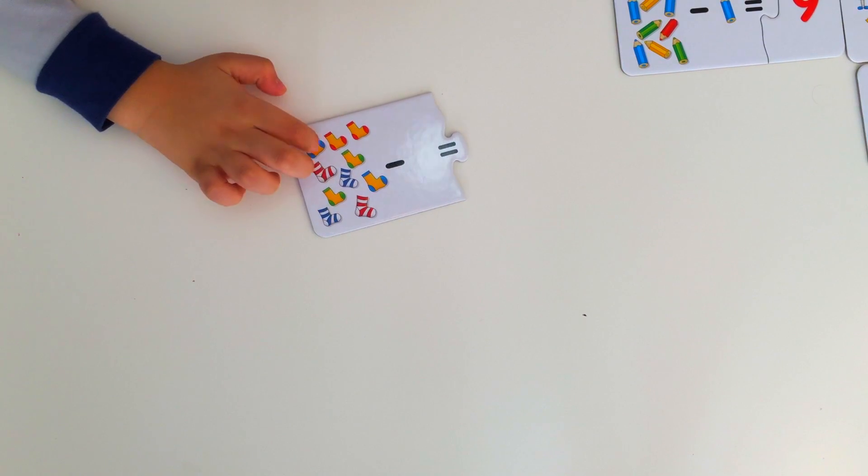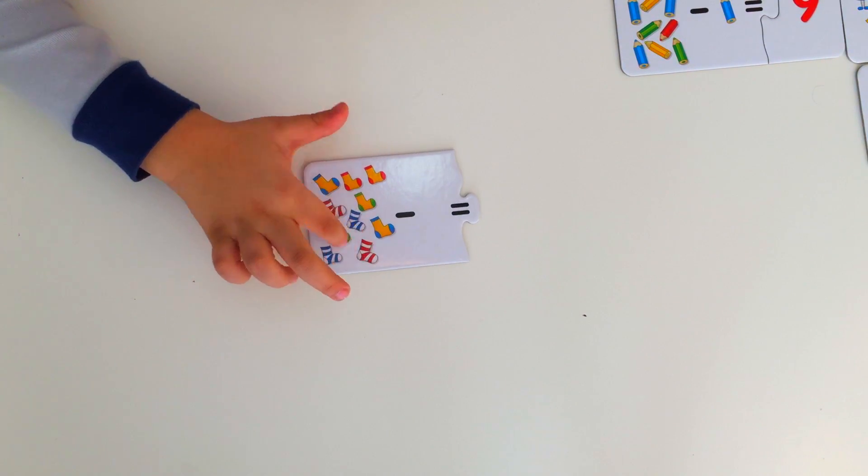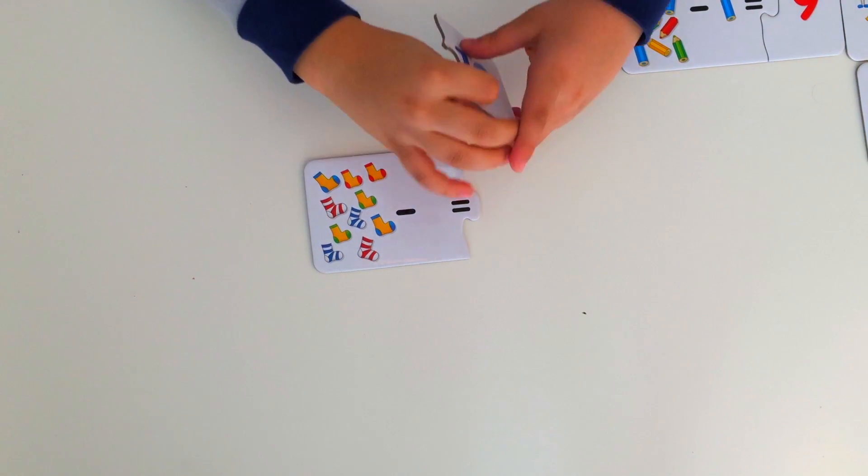One, two, three, four, five, six, seven, eight, nine, ten socks. Ten minus zero socks is ten socks.